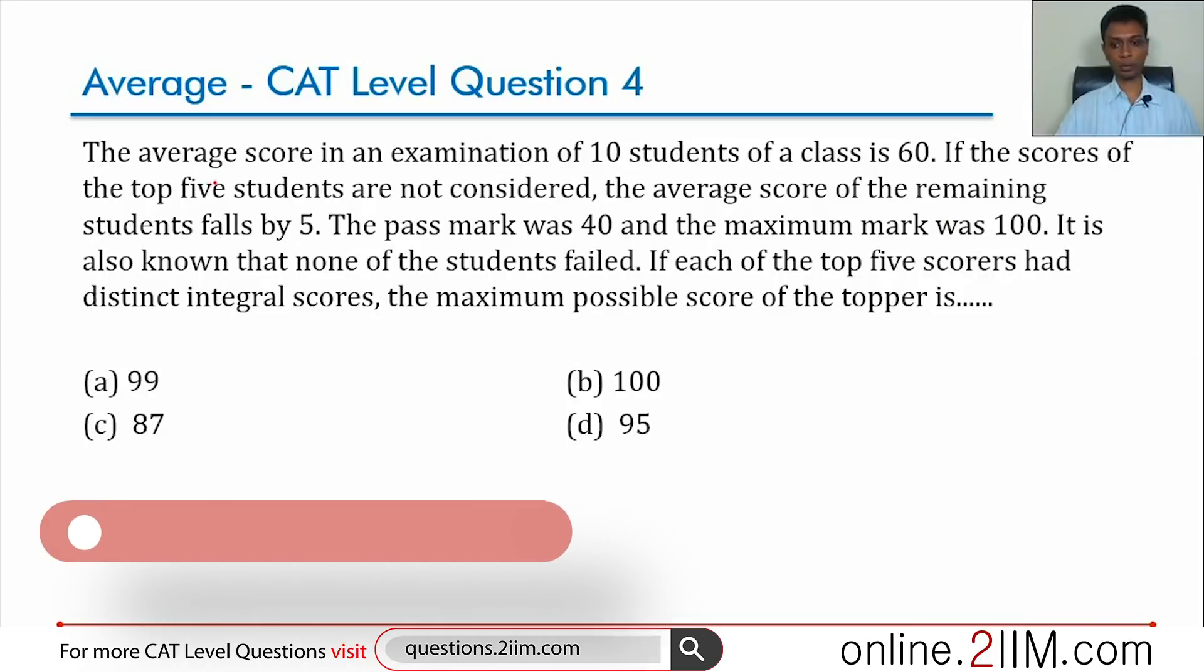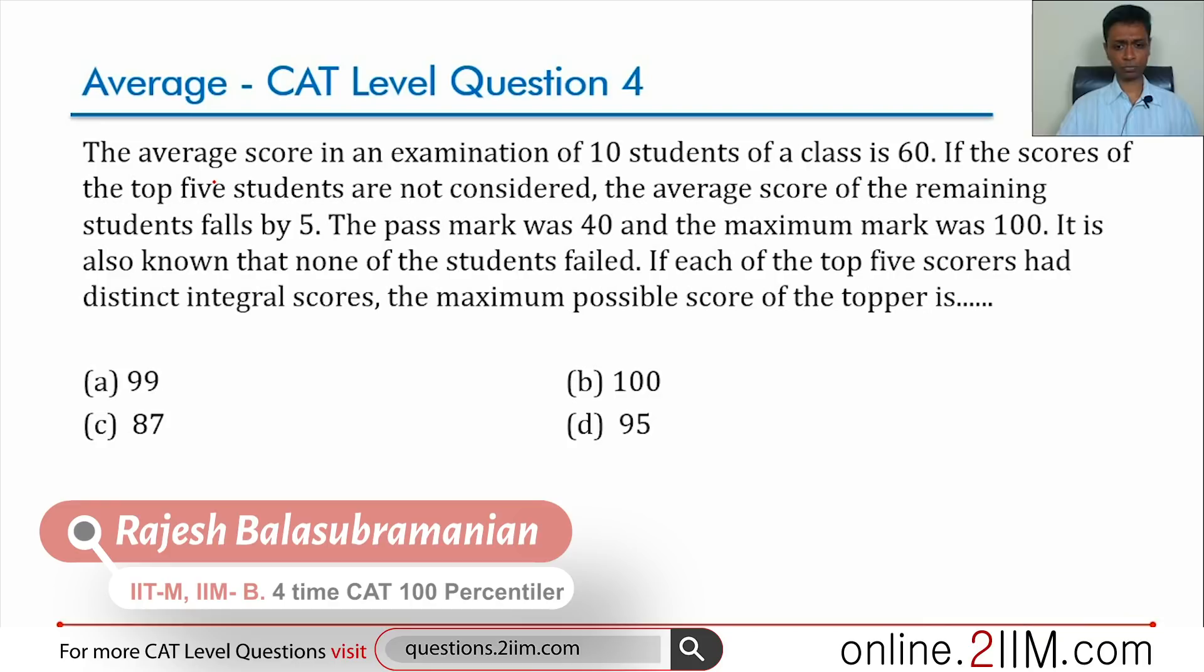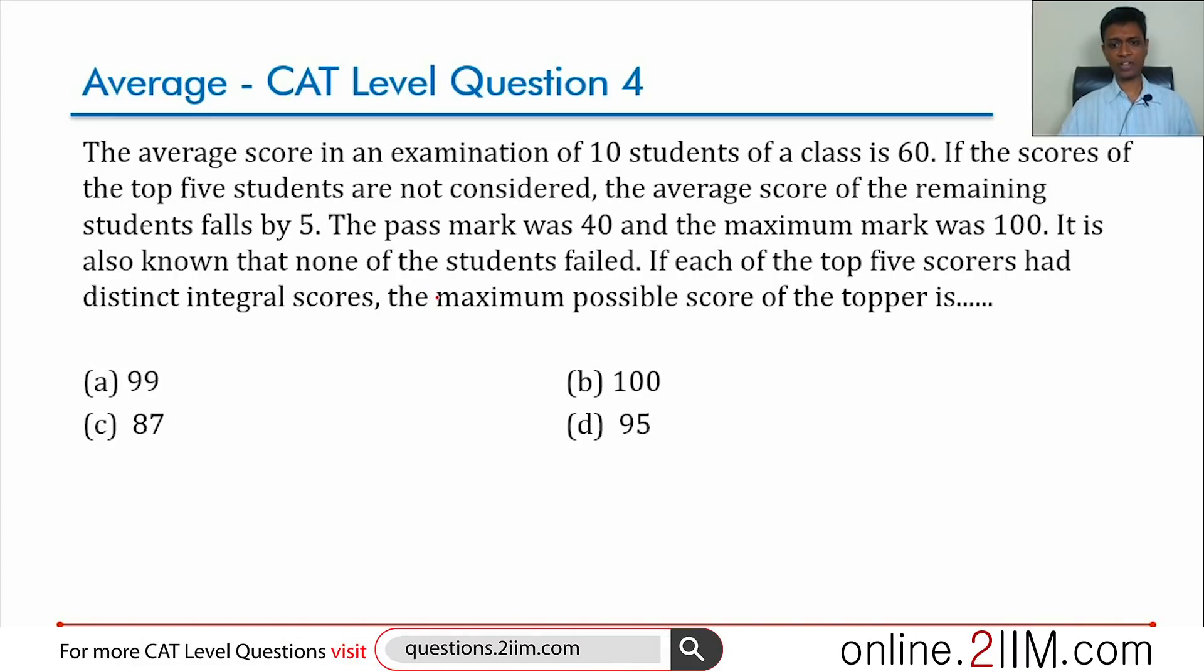I'm going to assume that you've read the question and go directly to the solution. It's a wonderful question but it's practically just a logical reasoning question. There is very little on the mathematical framework here. The average of students in a class of 10 students is 60, so total marks of all 10 is 600. This much we know straight away.